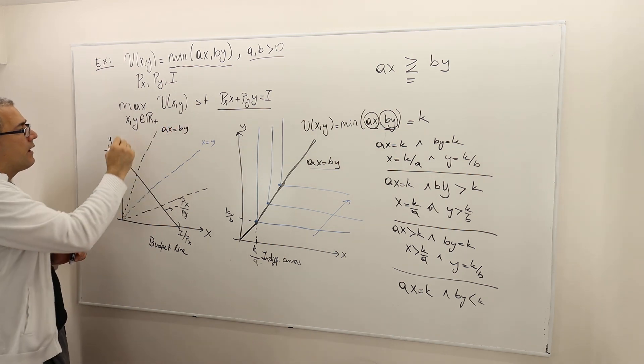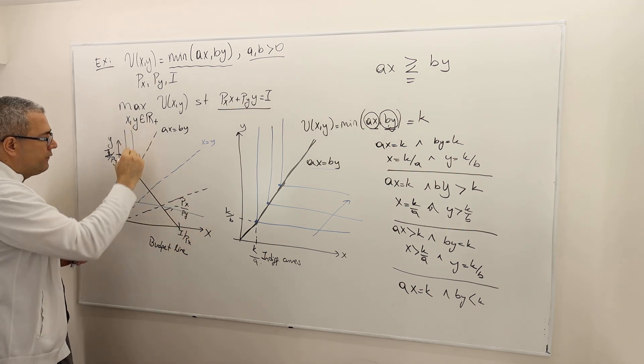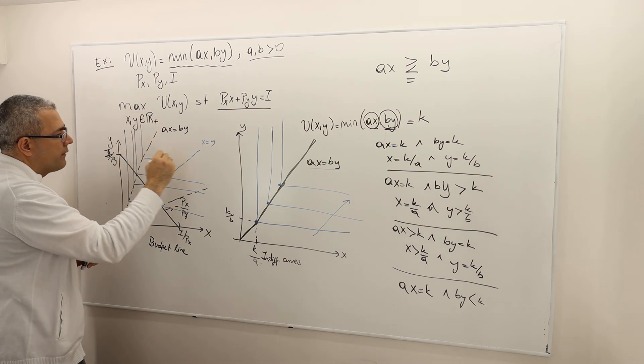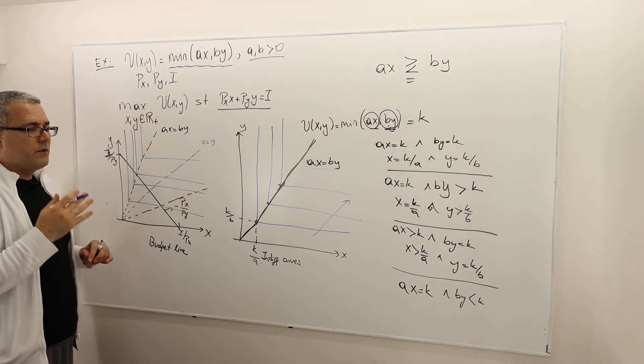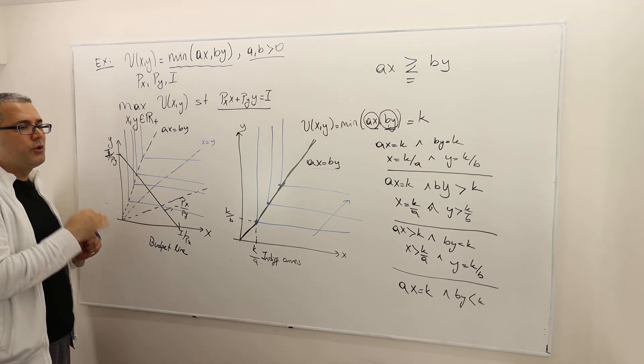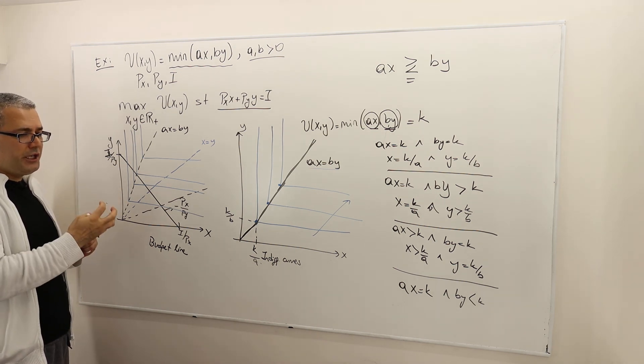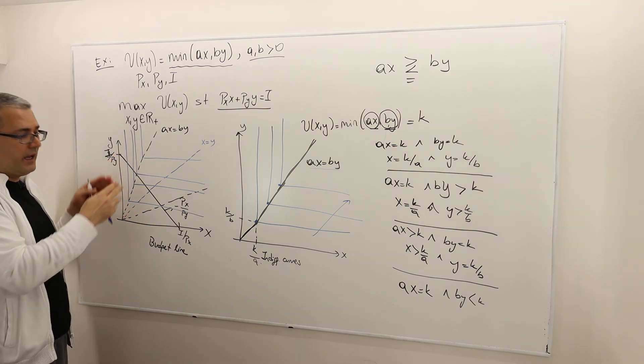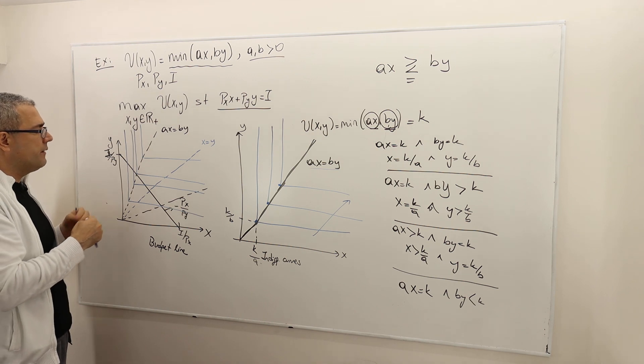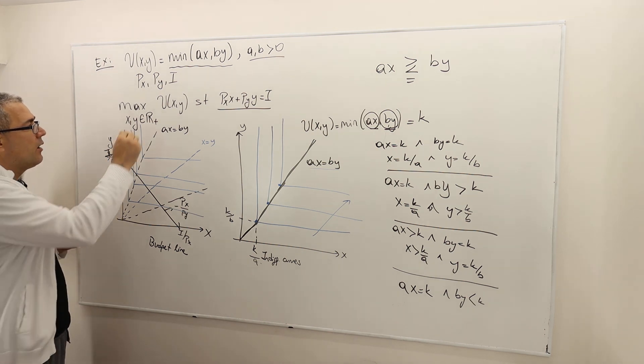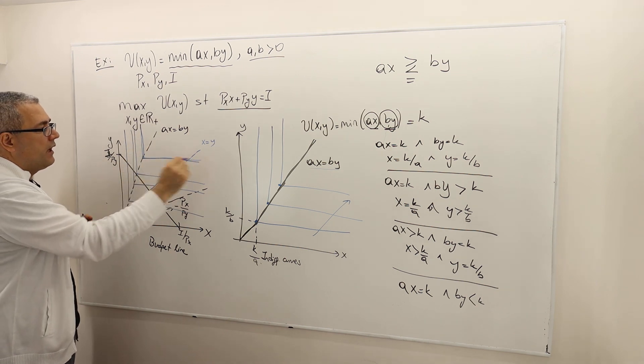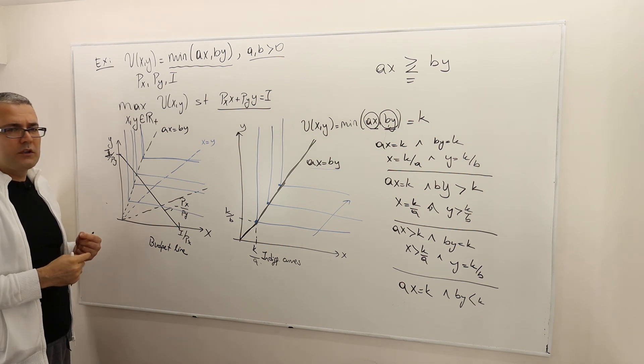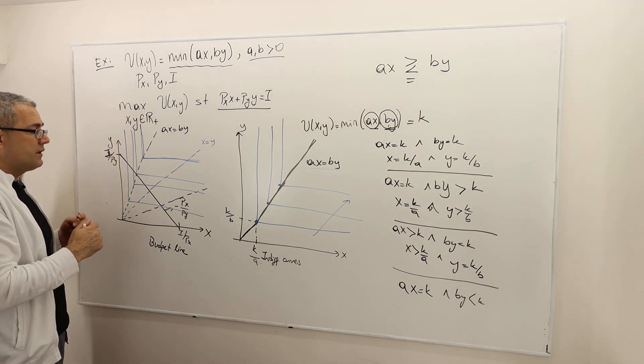So therefore, I'm going to assume without loss of generality that AX equals BY is this array. So what does that mean? That means the indifference curves are going to move on this line. So let's keep moving. So remember the idea. So it was what is the highest utility level we can achieve given the budget set we have. So within this triangle and on the boundaries, obviously, what is the highest utility I can get?